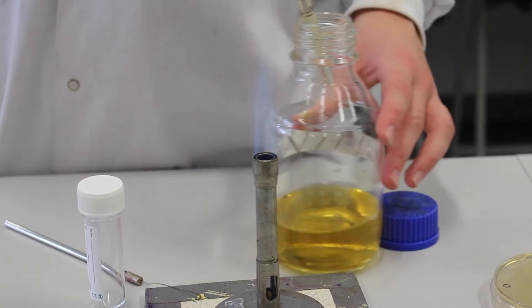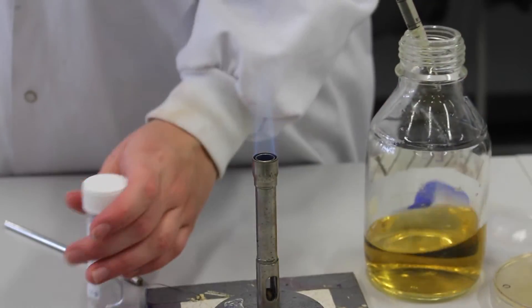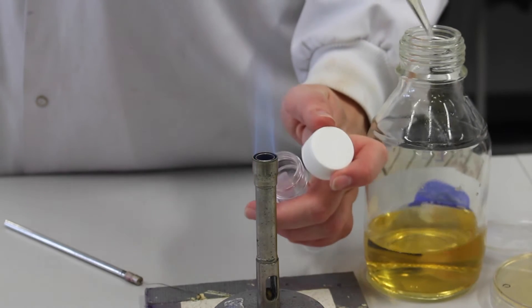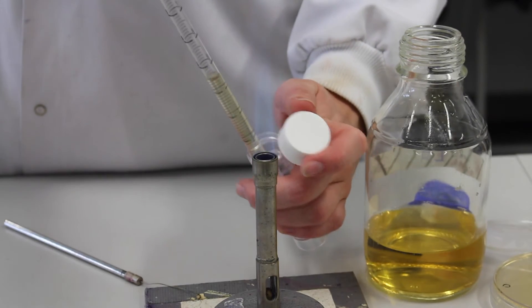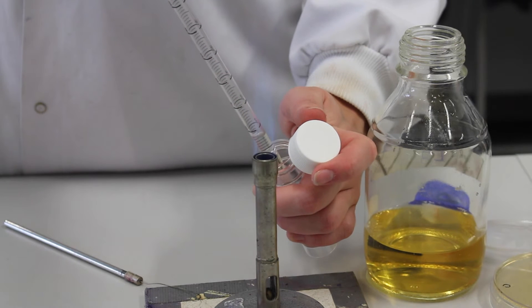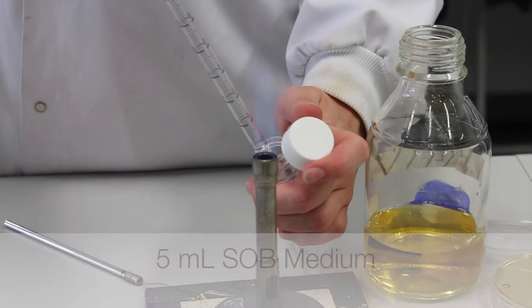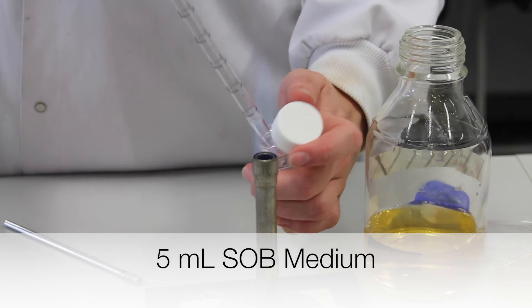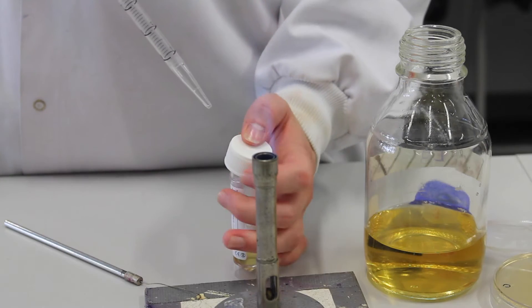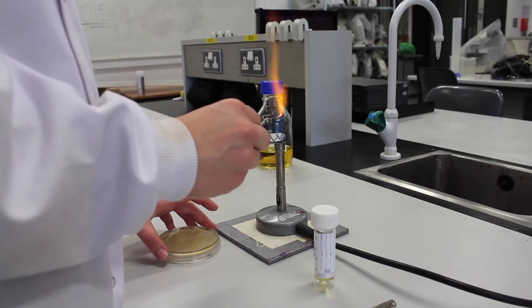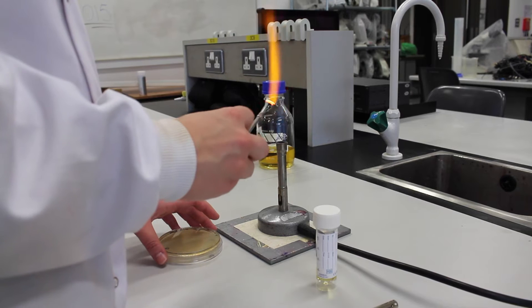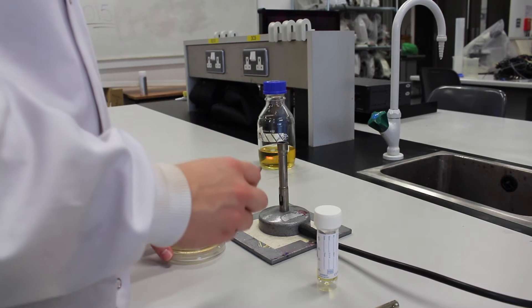The Bunsen burner will provide aseptic conditions to prevent contamination. The first step in preparing competent cells is to grow and create a stock of a bacterial culture. 5 ml of SOB medium is transferred to a tube. The inoculation loop is sterilized by passing it through the hottest part of the flame. It's allowed to cool.